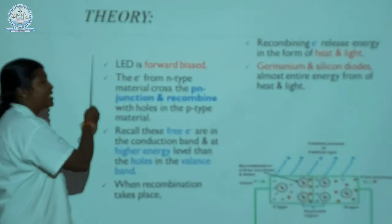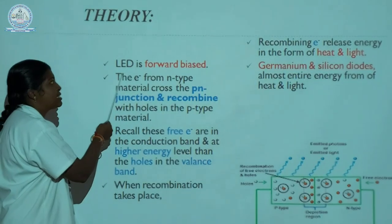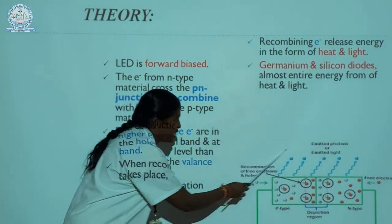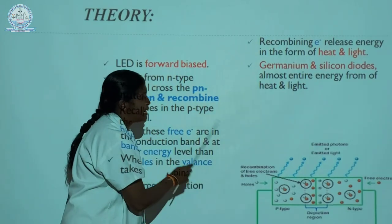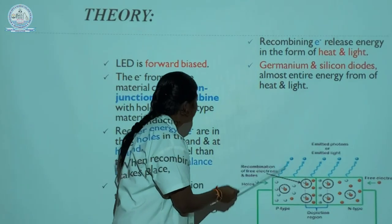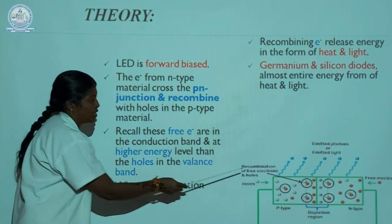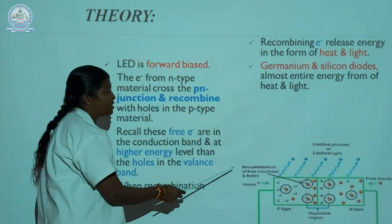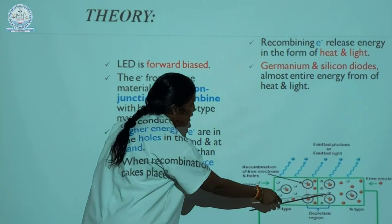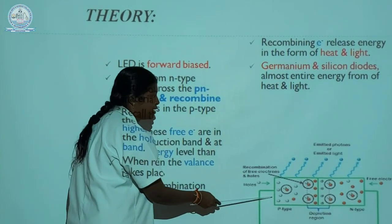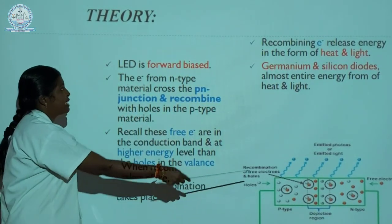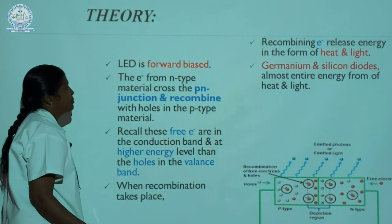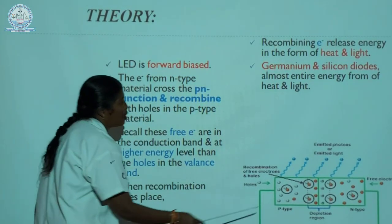Next, the theory of LED. The LED is forward biased. This is the LED diagram. The P junction and the N junction — electrons are present in the N junction and holes are present in the P junction. Thus, electrons can easily move across the junction and recombine with the holes.